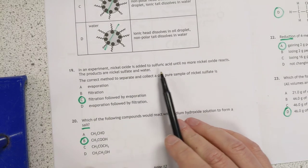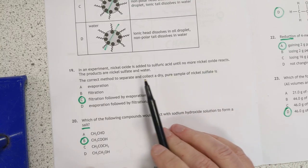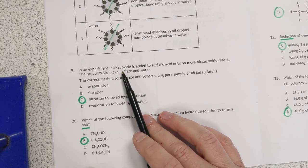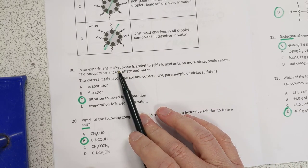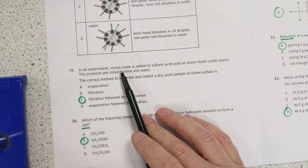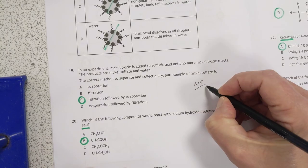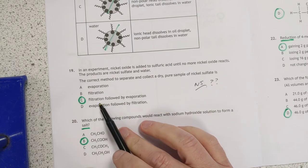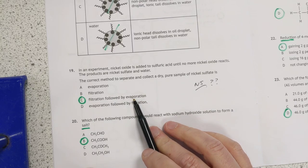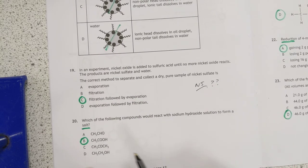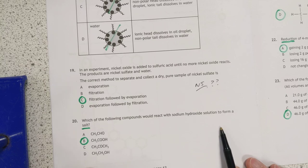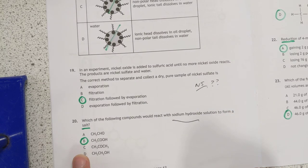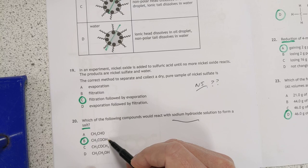And number 19. Nickel oxide is added to sulfuric acid until no more nickel oxide reacts. The products are nickel sulfate in water. Nickel oxide is, if you look up your data book, it might have suggested that. Data book. Nickel oxide is insoluble. Is this not a National 5 question? Like preparation of salt. Maybe that's in higher as well. And I've missed it. Tricky one. But I wonder how many people that's right. So anyway. You're going to have to filter out the excess nickel oxide. And then evaporate the remaining solution. Number 20. Which the following compounds with sodium hydroxide to form a salt. Now, that indicates that this is a base, of course. They're looking to form a salt. The other thing you need is an acid. And the only carboxylic acid there is B.